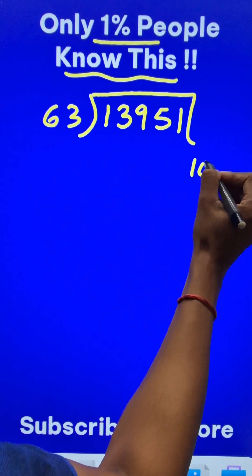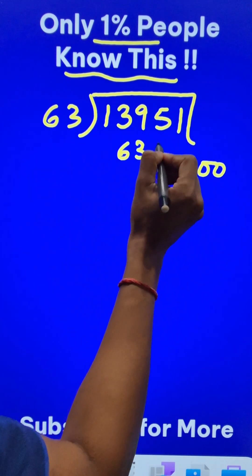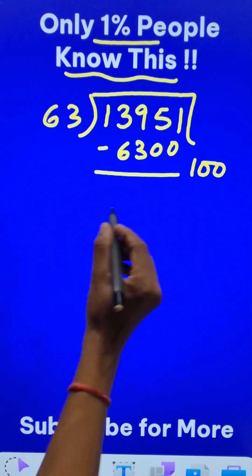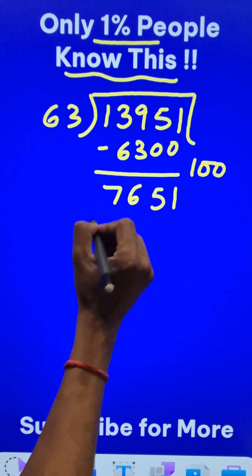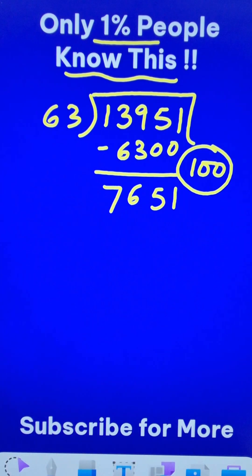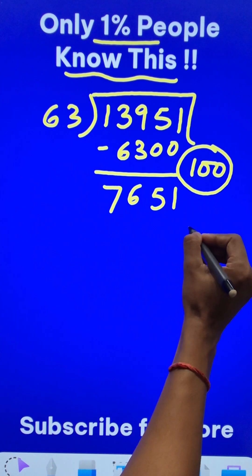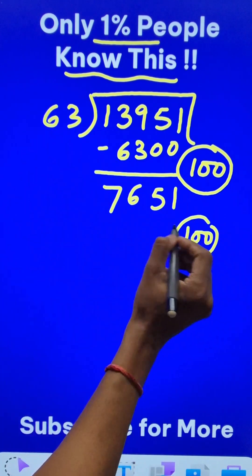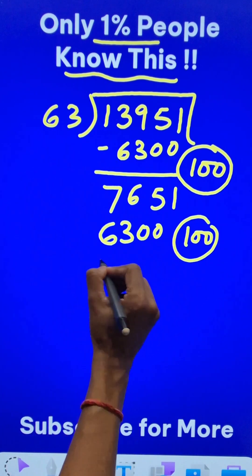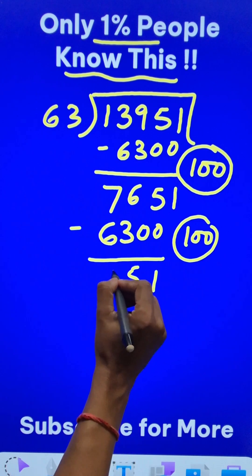So 63 times 100 is 6300, so I am going to subtract 6300 from this. That gives me 7651. Now this is one of my partial quotients. Likewise, I will do it one more time, like 100 times. So 63 into 100 is 6300 again and when I subtract them, I get 1351.